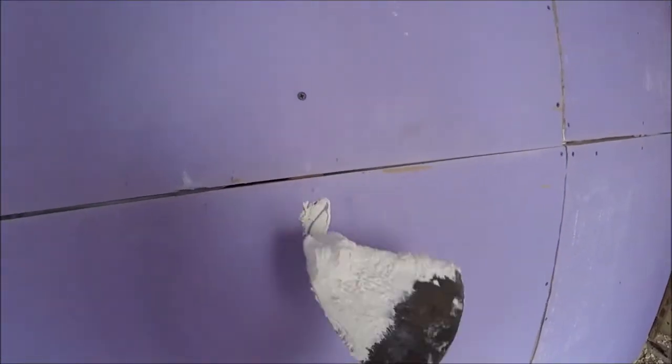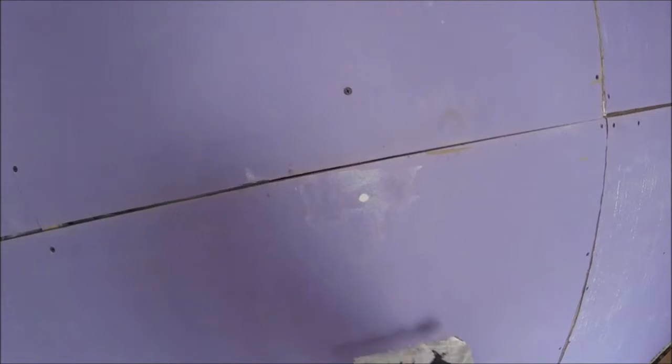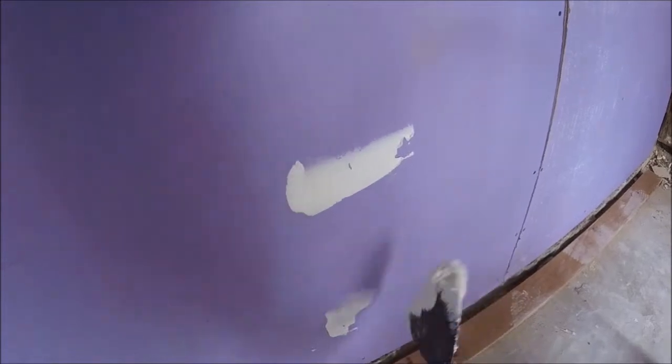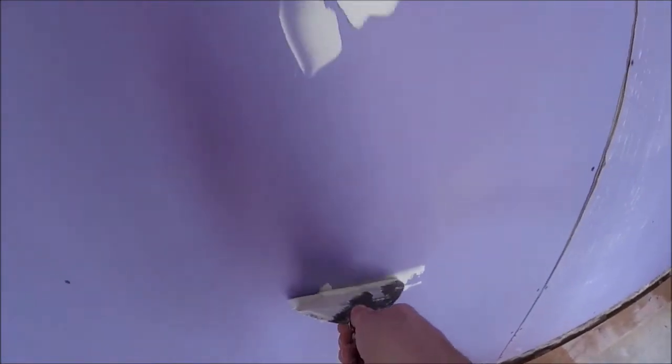Now you're going to go over to all of your screw holes and we're just going to mud over them. You can do them one at a time, you can just do it like this and then take your putty knives and go up. So we're just going to do all those just like that.